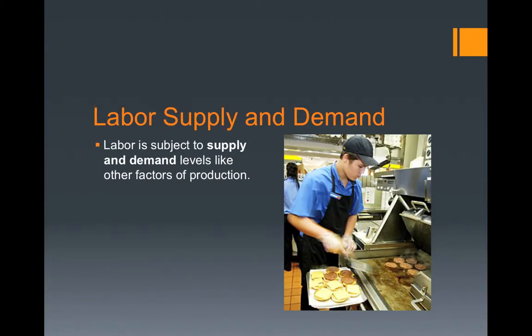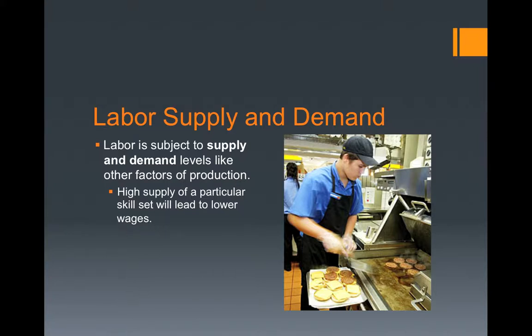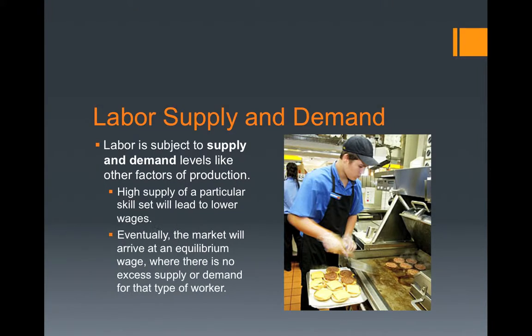Labor is subject to supply and demand levels like all other factors of production. A high supply of a particular skill set will lead to lower wages. Eventually, the market will arrive at an equilibrium wage where there is no excess supply or demand for that type of worker.